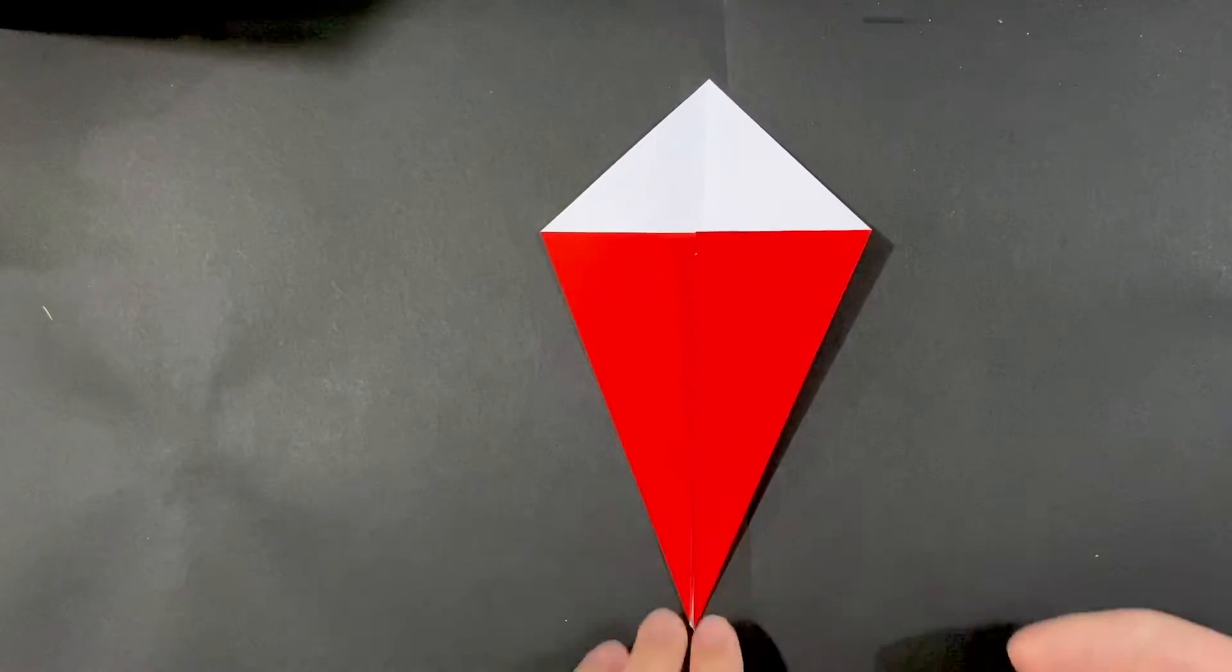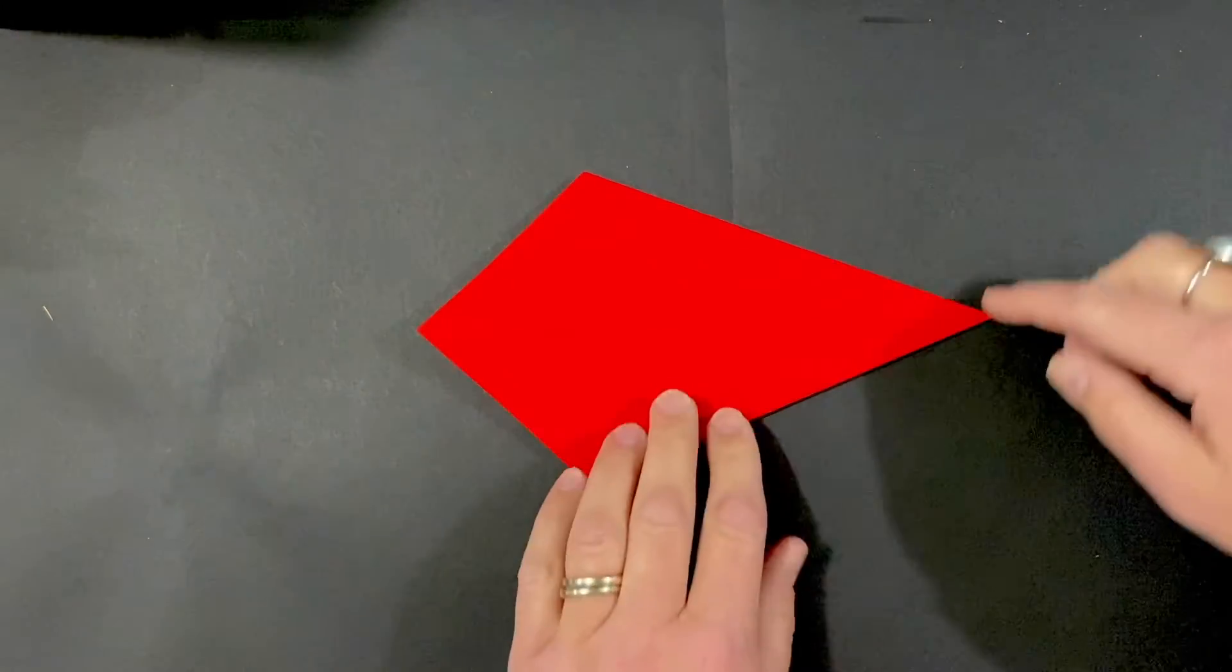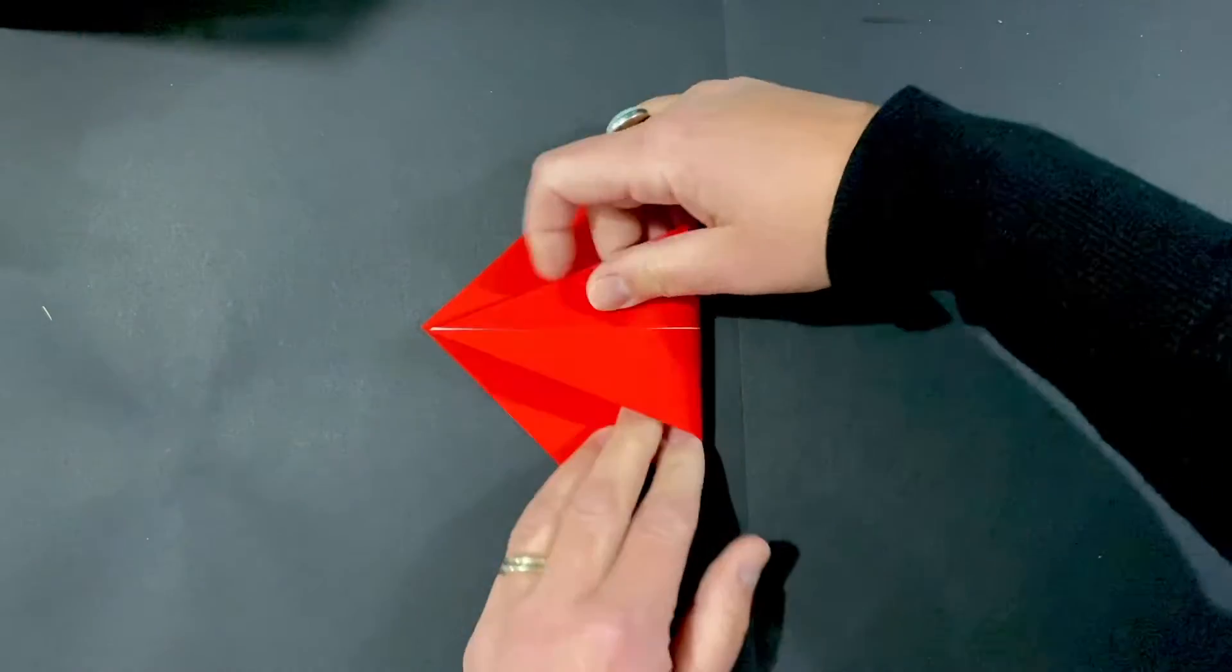You're going to flip this over and we're going to rotate it counterclockwise. Next, you're going to fold this right point over to the left and the points are going to meet.